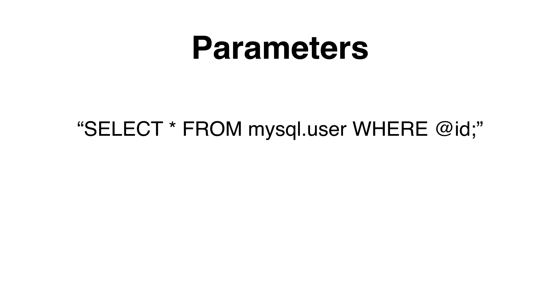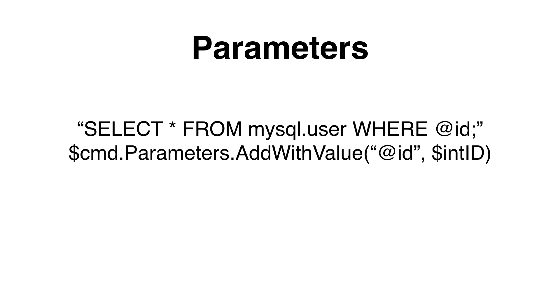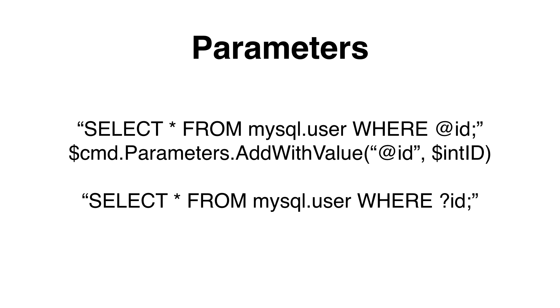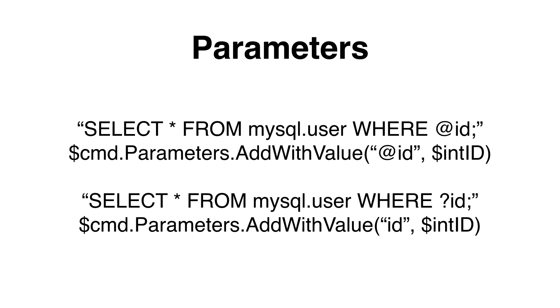If we need to work with parameters to pass to a SELECT query or a stored procedure, there are two ways of doing this. The first way is to use the @ symbol in our query and specify the name of the parameter. We then call the AddWithValue method within the Parameters property of the command object variable, specifying the @ symbol with the name of the parameter followed by the value. The second way is to use the question mark symbol to specify the parameter in our query string. The only difference is that we only need to specify the name of the parameter without any further symbols. Both of these work and it's up to you which one you prefer.